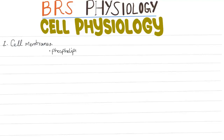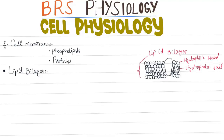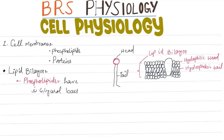Today we are going to talk about cell physiology. First of all, cell membrane. Cell membranes are composed of phospholipids and proteins. Lipid bilayer: phospholipids have a glycerol backbone which is the hydrophilic head, and two fatty acid tails which are hydrophobic.